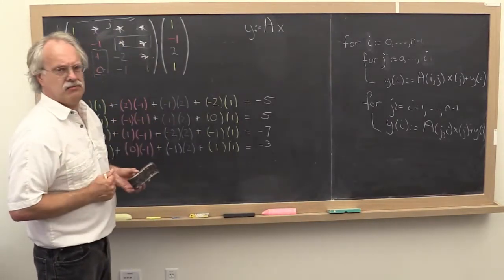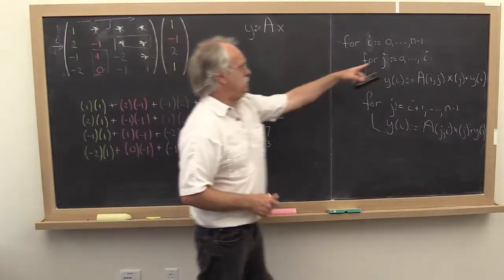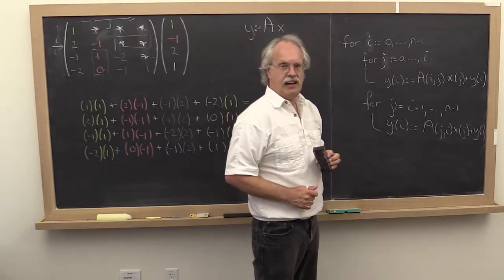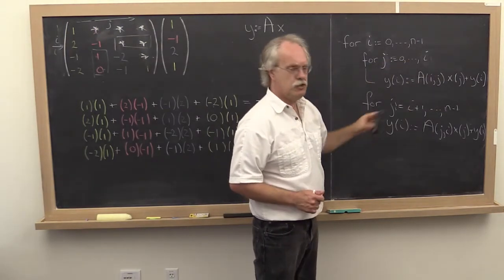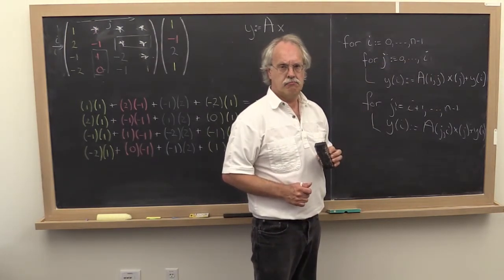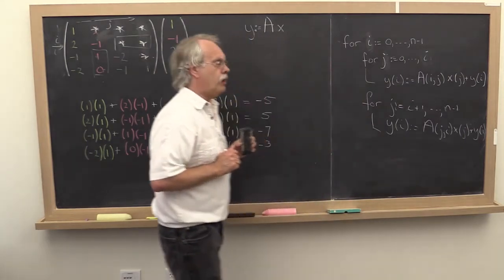Hmm. Is that loop correct? Should this be i minus 1 or should that be i? Should this be i or should this be i plus 1? Already things are getting a little bit more complicated.